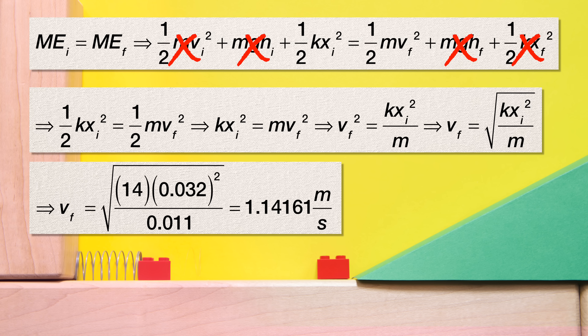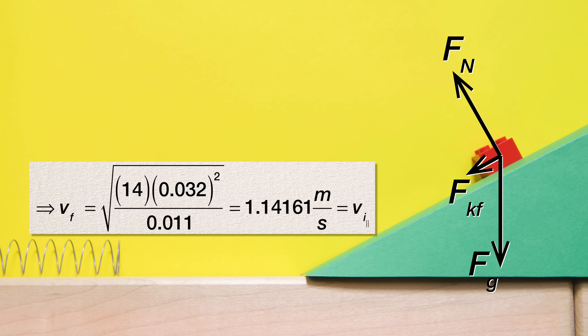Now we need to look at the incline. We get to draw a free body diagram for the block as it goes up the incline. The force of gravity is straight down, the force normal is perpendicular to the incline and up, and the force of kinetic friction is parallel to the incline and opposes the motion of the block, which is sliding up the incline, so the force of kinetic friction is down the incline.